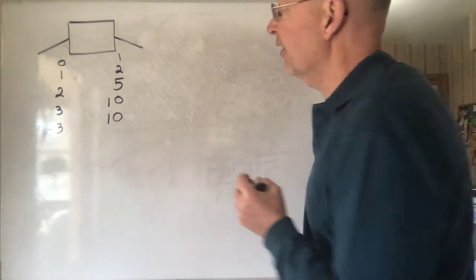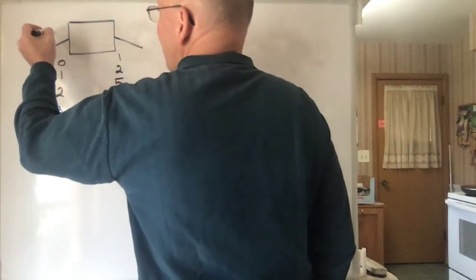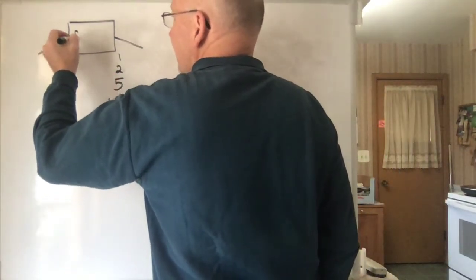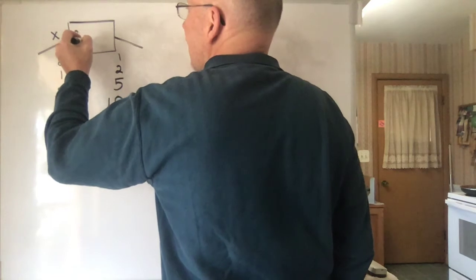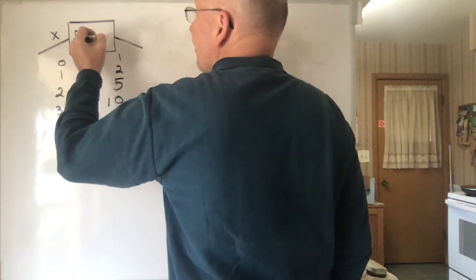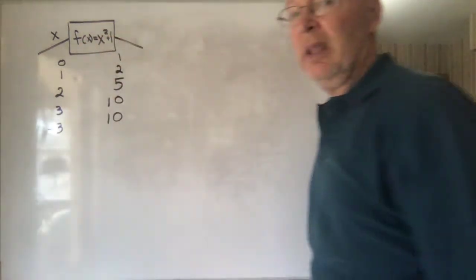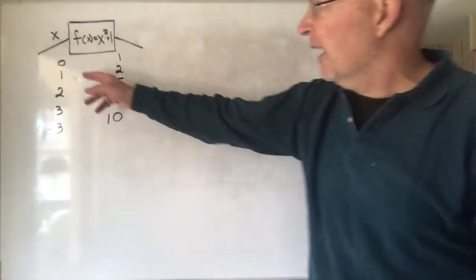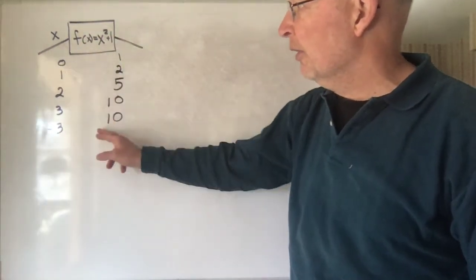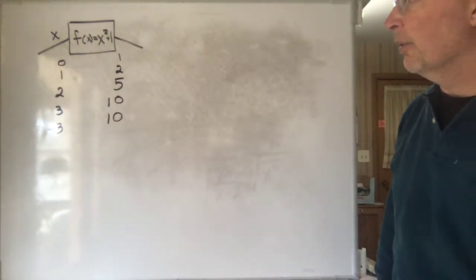The one I have in mind does this. Whatever number goes in, it takes that number, it squares it and then it adds one. So, if you notice everything I have here, if you square it and add one, you get the thing on the right.